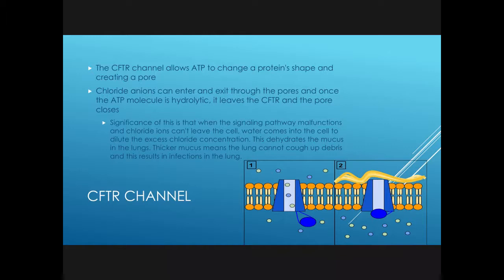Now we're going to discuss the impact of the CFTR channel. The CFTR channel allows ATP to change a protein shape and also creates a pore. Chloride anions can enter and exit through those pores, and when an ATP molecule is hydrolyzed, it leaves the CFTR and the pore closes. When the pathway malfunctions and the chloride can't leave the cell, water comes into the cell and dilutes the excess chloride, which causes dehydration of the mucus in the lungs. If there's more mucus, the lung can't cough up debris, and that results in infections. Number one here is a properly functioning channel, and number two shows thick mucus, which results in infections.